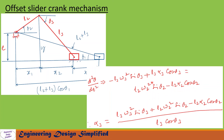After rearranging, we get: alpha3 = (l3·omega3²·sin(theta3) + l2·omega2²·sin(theta2) − l2·alpha2·cos(theta2)) / (l3·cos(theta3)). This is the equation to find alpha3, that is the angular acceleration of the coupler link.